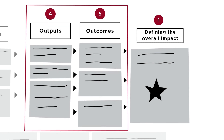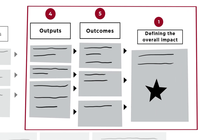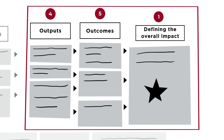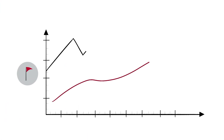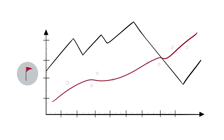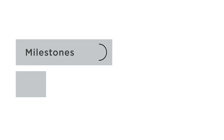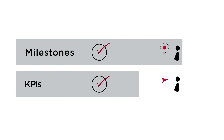KPIs come from the outputs and outcomes in your roadmap, which should lead to your long-term goals. KPIs are monitored regularly to flag risks and challenges, and they also generate useful insights for your project. Achieving milestones is largely within your organisation's control, while achieving KPIs isn't always.